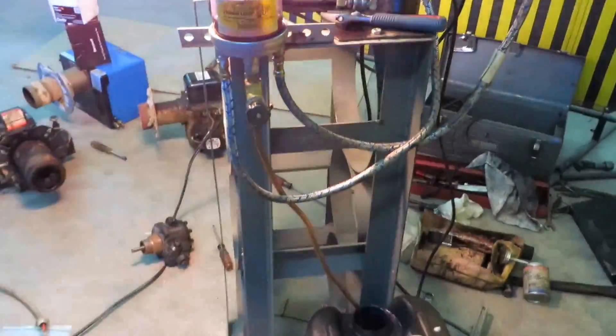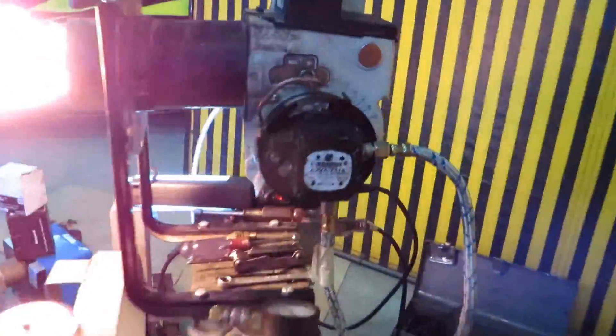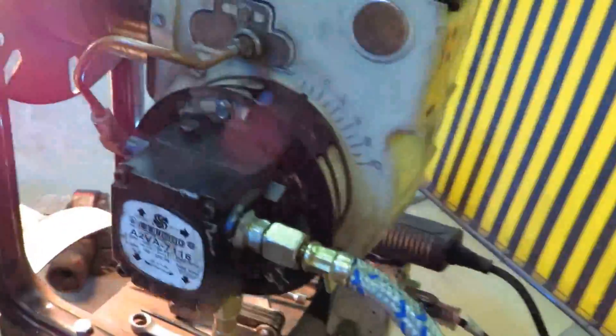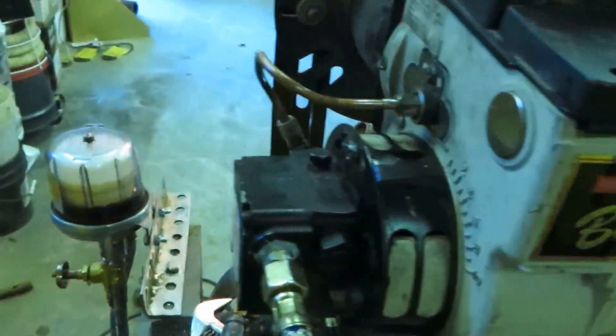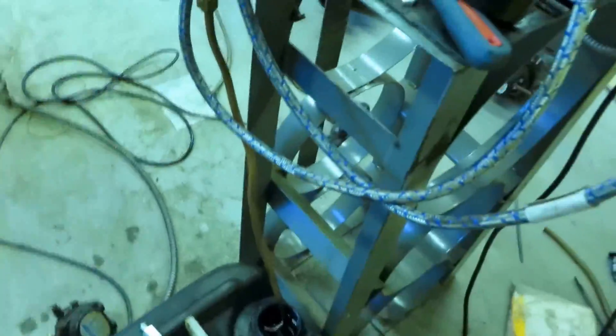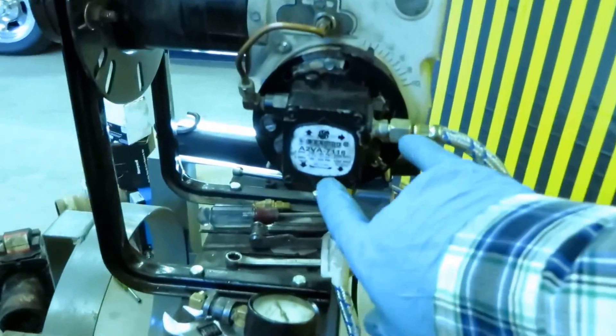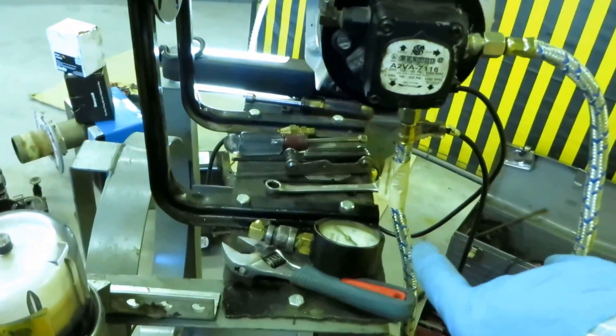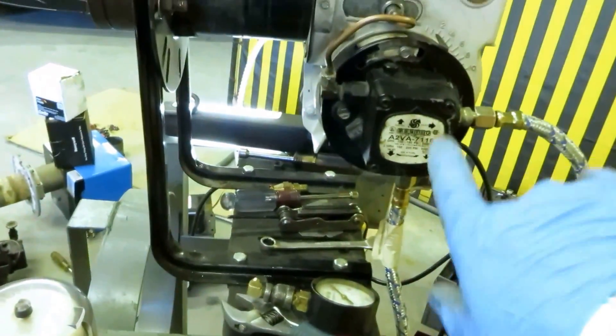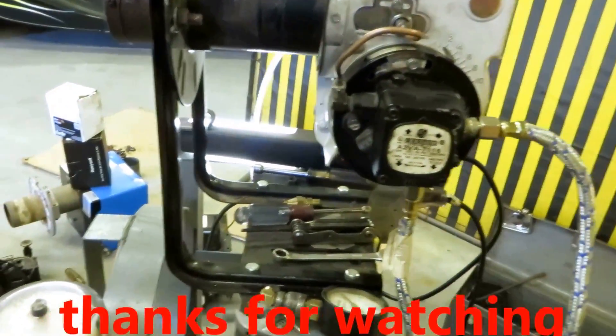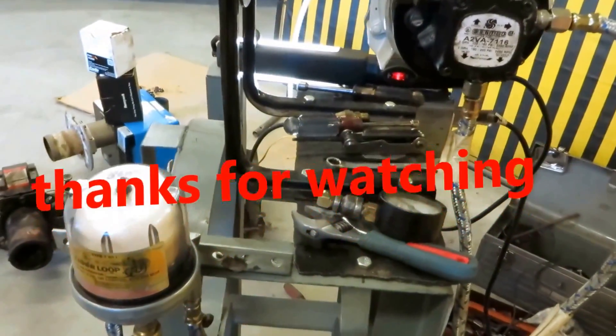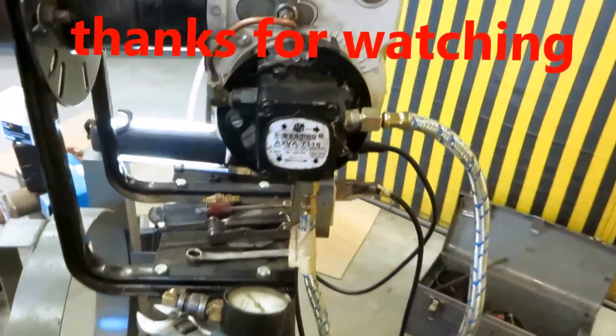That's the tiger loop. Two pipe system. Now there's another way you could do a two pipe system. You could go right back to the tank. You don't need the tiger loop. I'll go over that with you too.